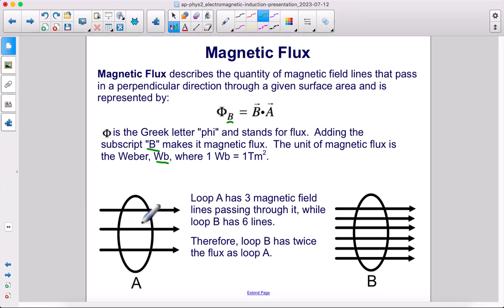Here we have a visual representation of what flux means. We can compare the flux between these two loops. Loop A has three magnetic field lines passing through it, while loop B has six lines.